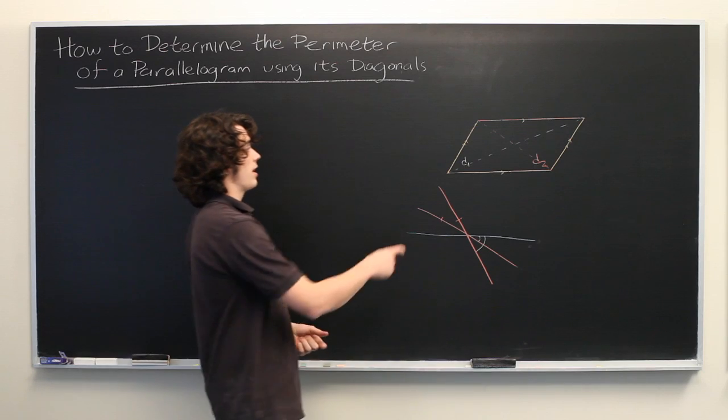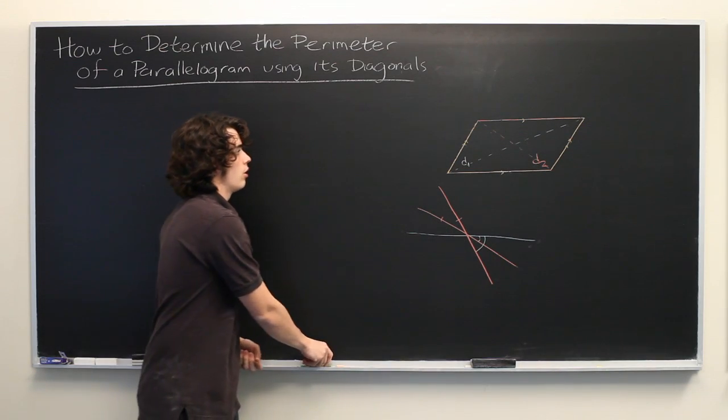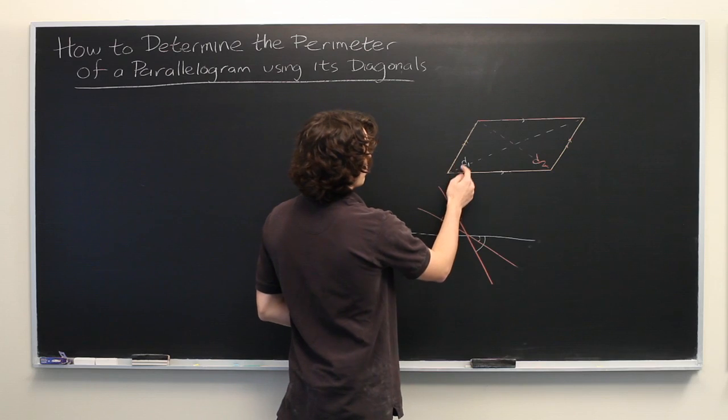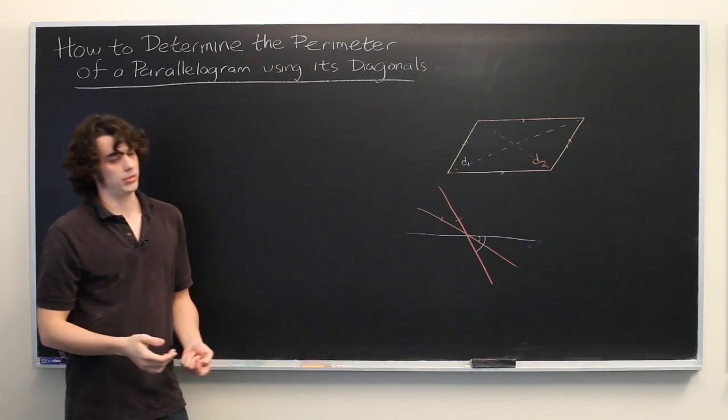Simply put, this is not enough information to determine the perimeter or the area of the parallelogram. You would need to know, for example, some of the interior angles or the measures of one of the other sides. But just that alone is not enough.